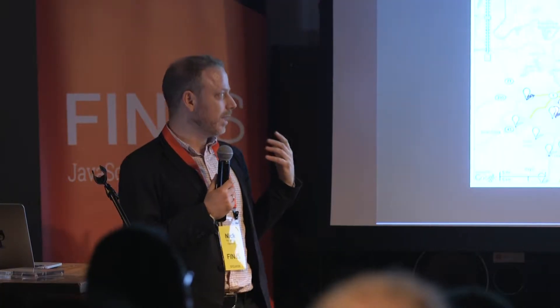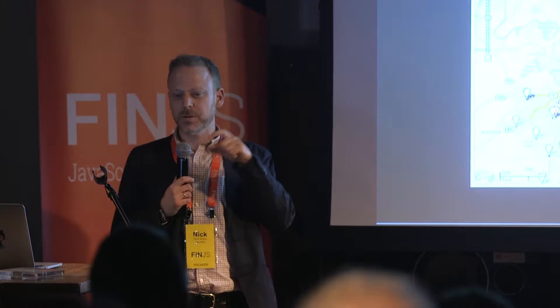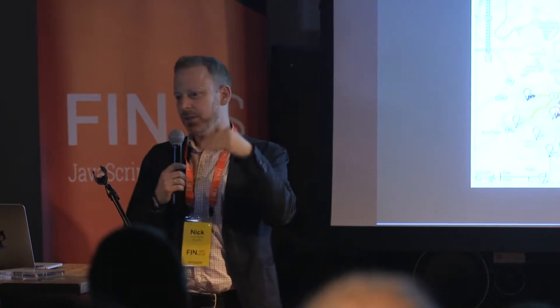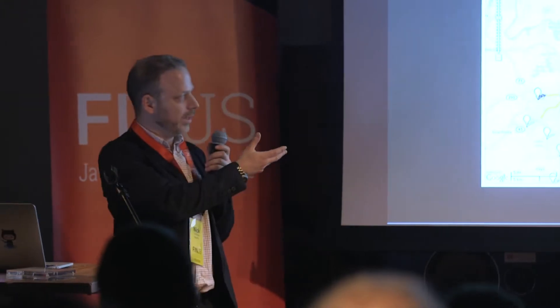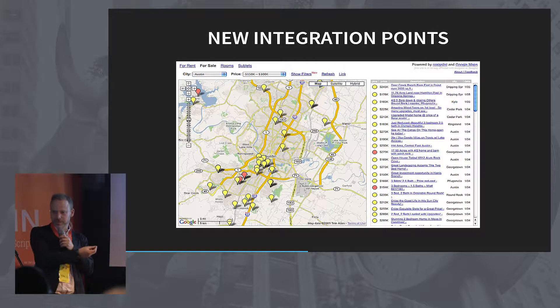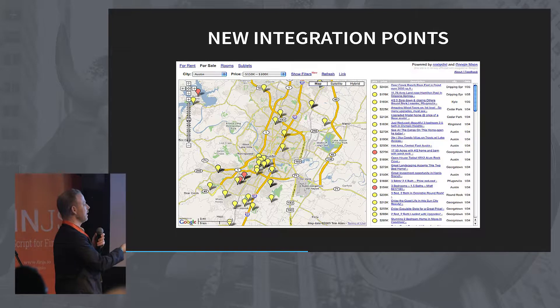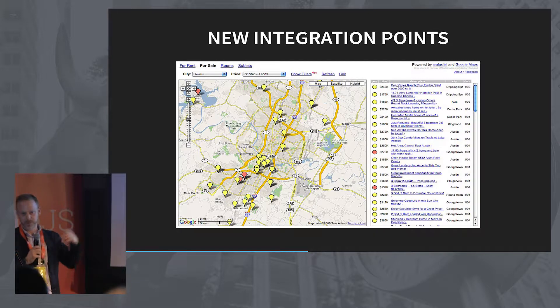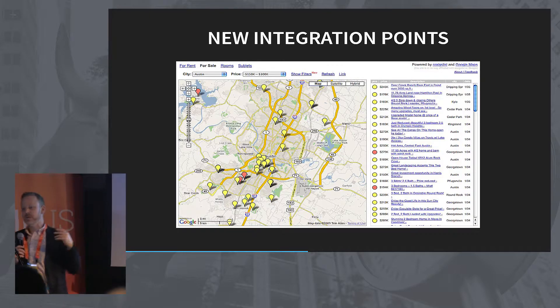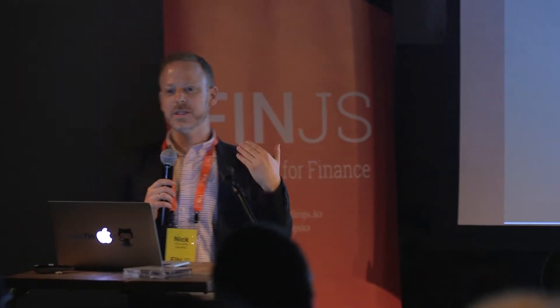The thing is, if you created a map API that people had to call and wire everything together on the front end, nobody would have used it, or very few people. But instead you got things like Housing Maps, which mashed up Craigslist real estate listings onto Google Maps — you could actually see where the apartments being listed were. By having this stuff available on the client, you could create these integration points that nobody had really thought about or imagined before.